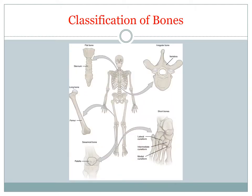Bones are classified according to shape and structure, which encompasses flat bones, long bones, short bones, irregular bones, and sesamoid bones. Flat bones have a thin, roughly parallel surface. Flat bones form the roof of the skull, sternum, the ribs, and the scapula. They provide protection from underlying soft tissues and offer an extensive surface for the attachment of skeletal muscles.